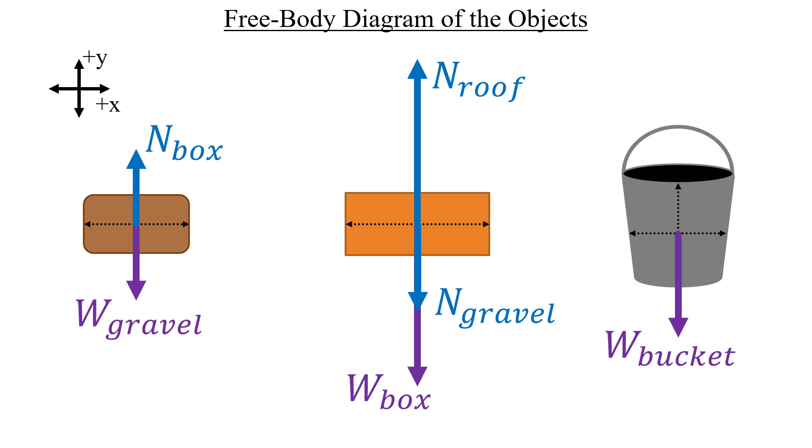The cable connecting the box and the bucket will exert a tension force on both objects, acting to the right on the box and upwards on the bucket. Lastly, we have frictional forces to account for. If the box moves to the right, then the friction on the box will point in the minus x direction. For the friction acting on the gravel, we have the opposite situation going on. Newton's third law demands that it would act equally in the opposite direction, similar to what we saw in problem number 16 from chapter 5.